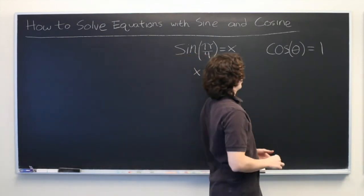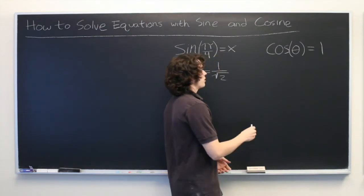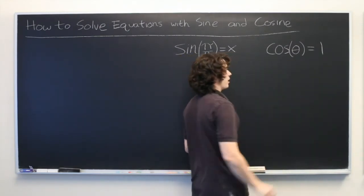Now this might be a little bit trickier. We want to find all the values of theta for which cosine of theta is equal to 1.